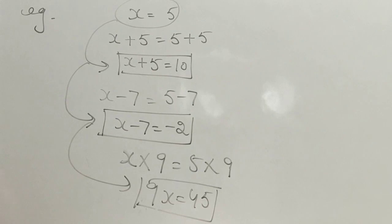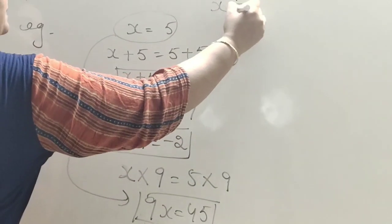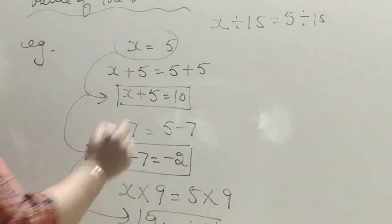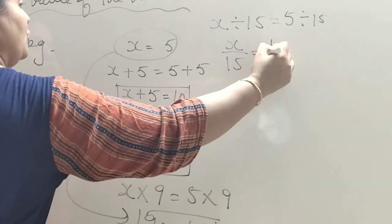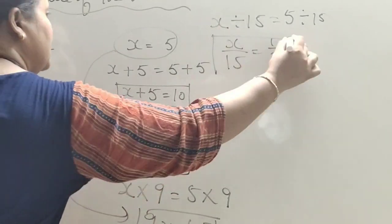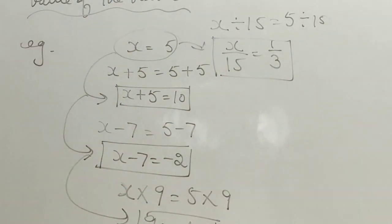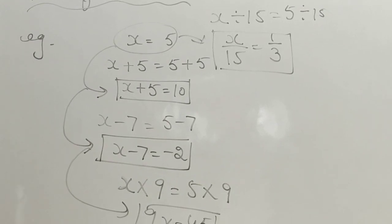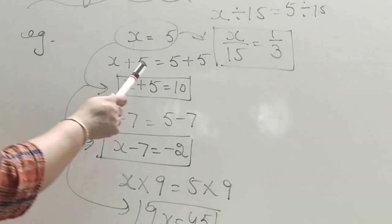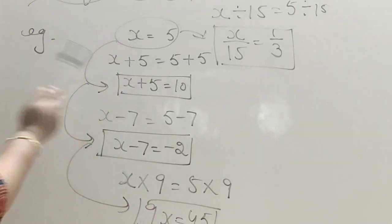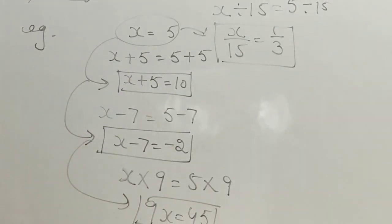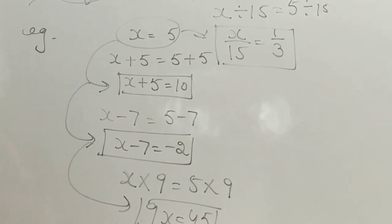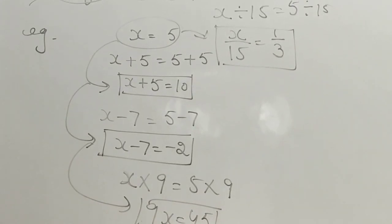Dividing by 15: x upon 15 equals 1 upon 3. From a single solution value, we can form infinite equations by adding, subtracting, multiplying, or dividing any number on both sides. By this way, we can form infinite equations from a given value of the variable.